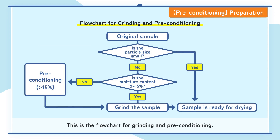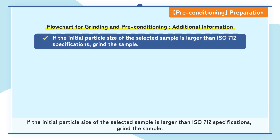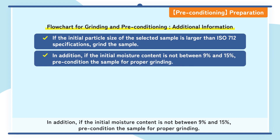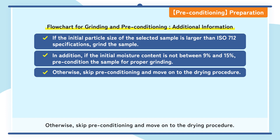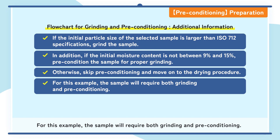This is the flow chart for grinding and preconditioning. If the initial particle size of the selected sample is larger than ISO 712's specifications, grind the sample. In addition, if the initial moisture content is not between 9% and 15%, precondition the sample for proper grinding. Otherwise, skip preconditioning and move on to the drying procedure. For this example, the sample will require both grinding and preconditioning.